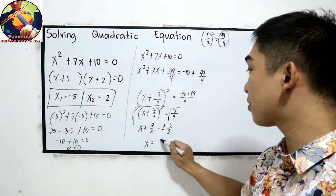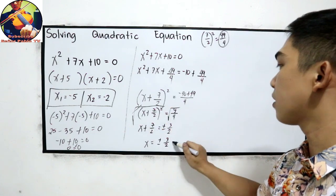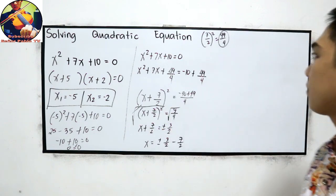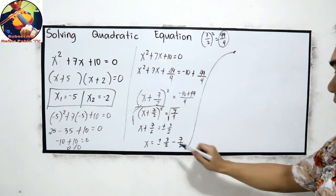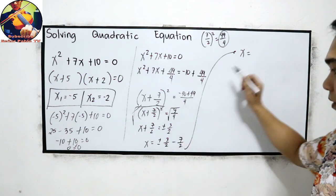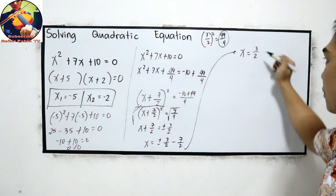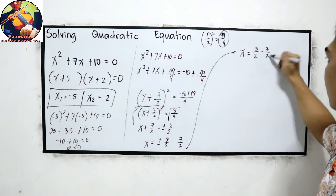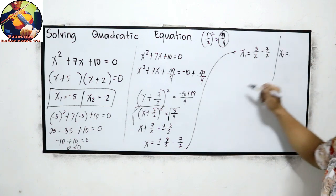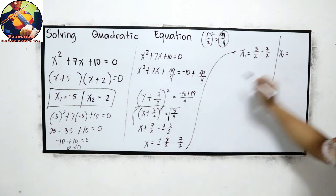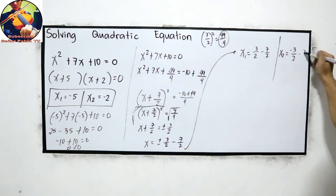x equals plus or minus 3 over 2, transposing negative 7 over 2. For x sub 1, we use the positive: positive 3 over 2 minus 7 over 2. For x sub 2, we use the negative: negative 3 over 2 minus 7 over 2.